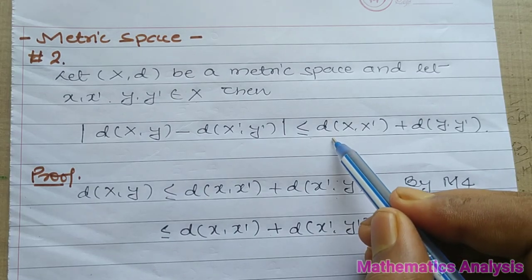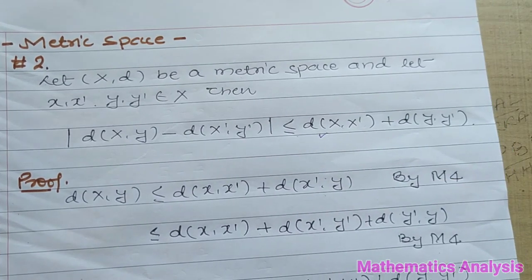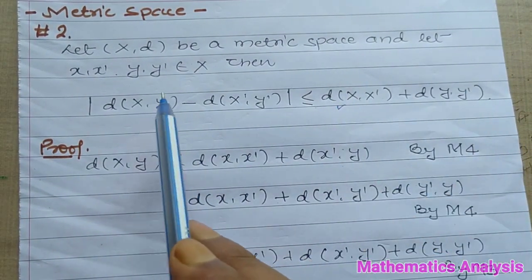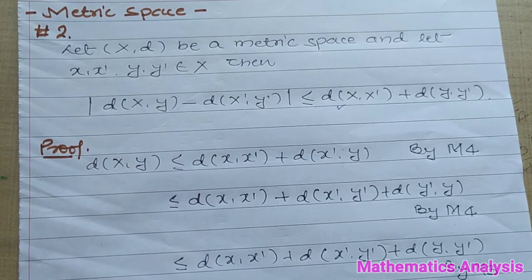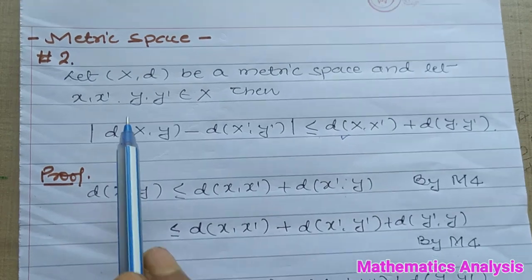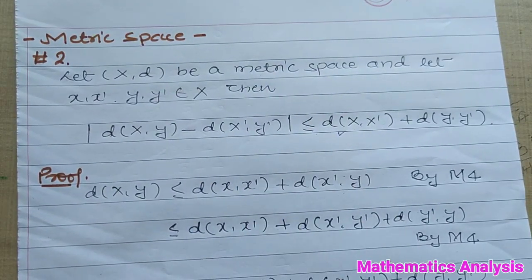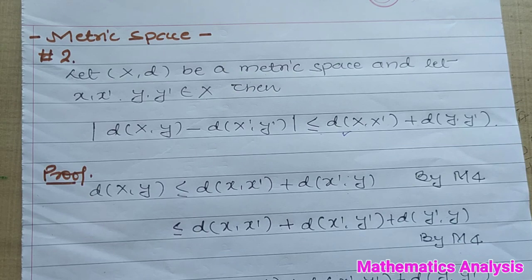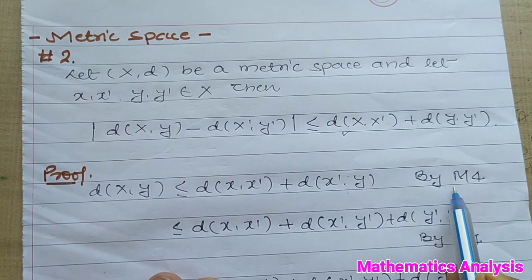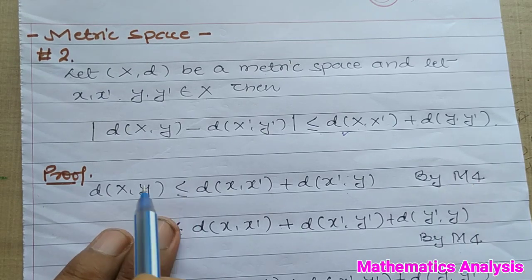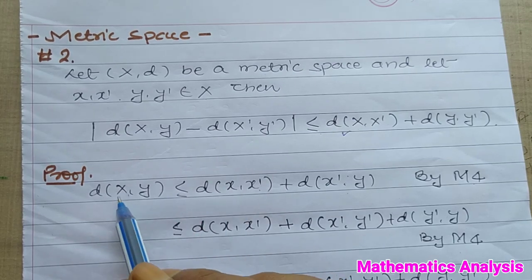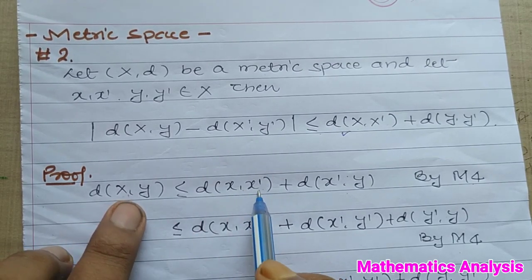If we remember the metric space, first of all, we have to take the point of this part. I am taking the point of this part. I have already said that X and d are a metric space. If you have the metric space, it will open all the properties. I will use the metric space properties. I have taken a new variable x', and then I will write it. I will have x' with x', and the x' will be finished.